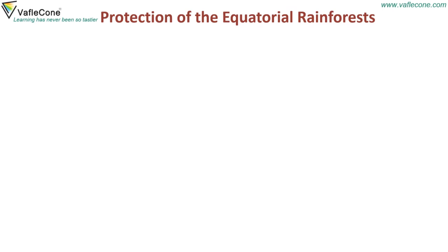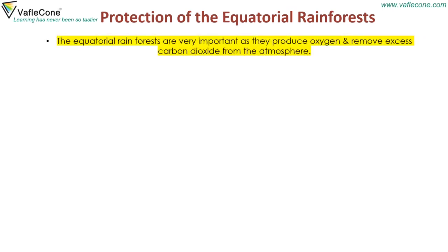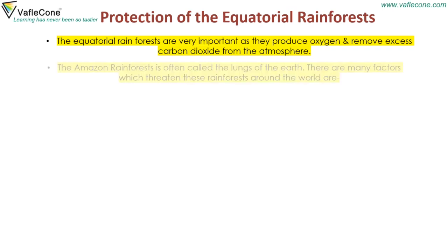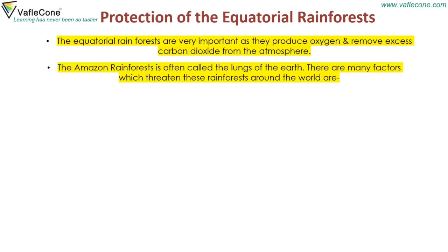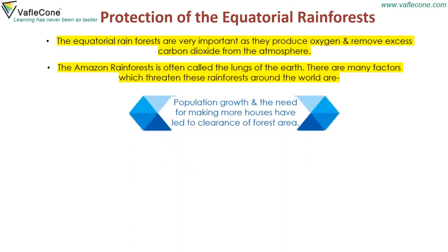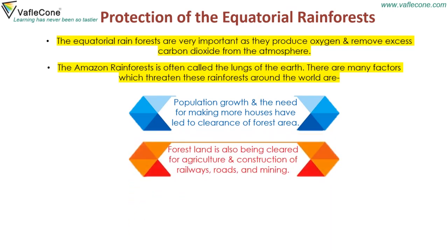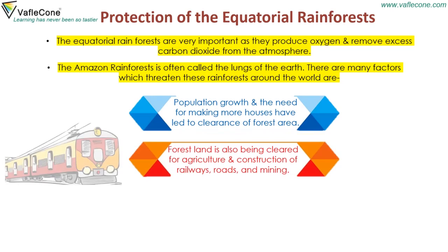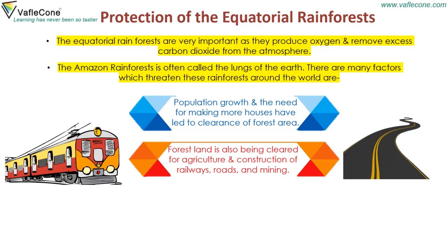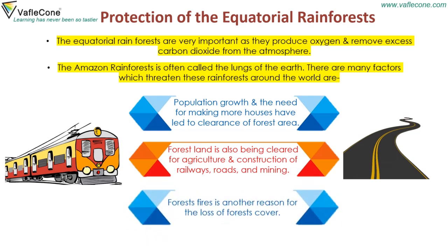Protection of the equatorial rainforests: The equatorial rainforests are very important as they produce oxygen and remove excess carbon dioxide from the atmosphere. The Amazon rainforest is often called the lungs of the earth. Many factors threaten these rainforests: population growth and the need for more houses have led to clearance of forest area. Forest land is also being cleared for agriculture and construction of railways, roads and mining. Forest fires are another reason for the loss of forest cover.